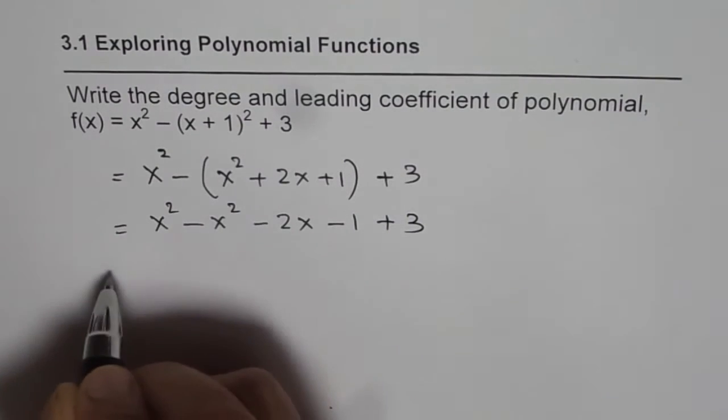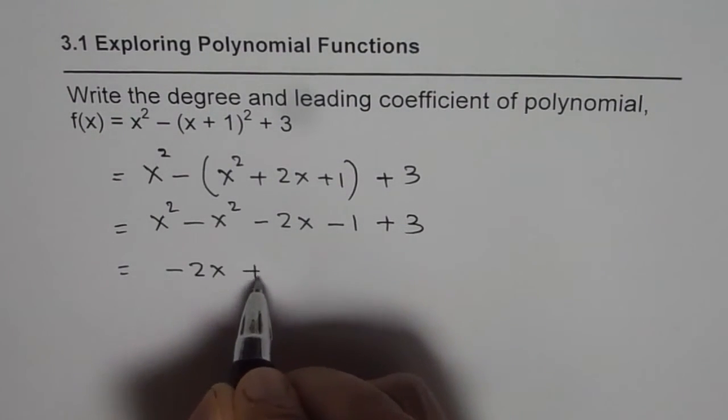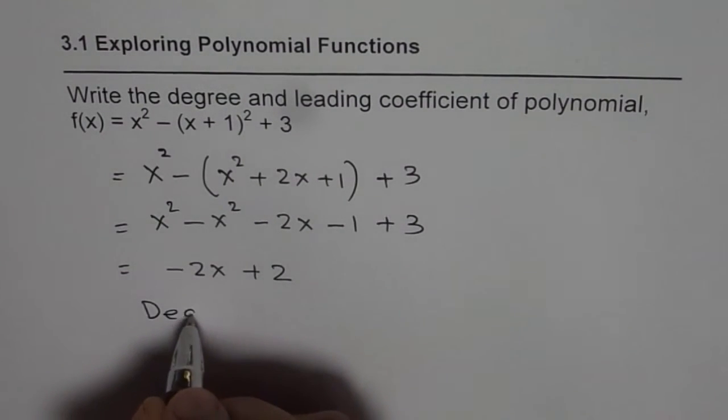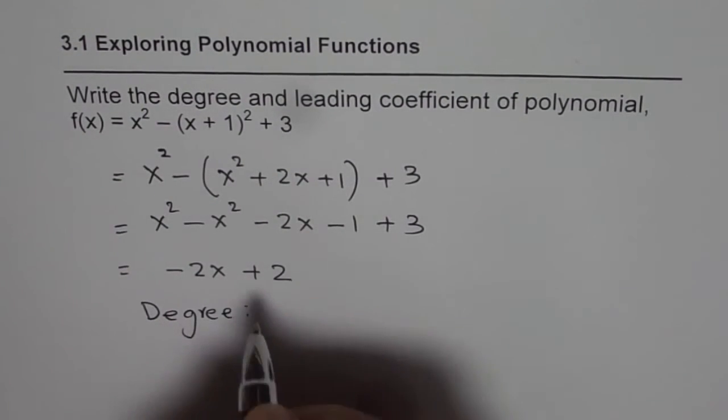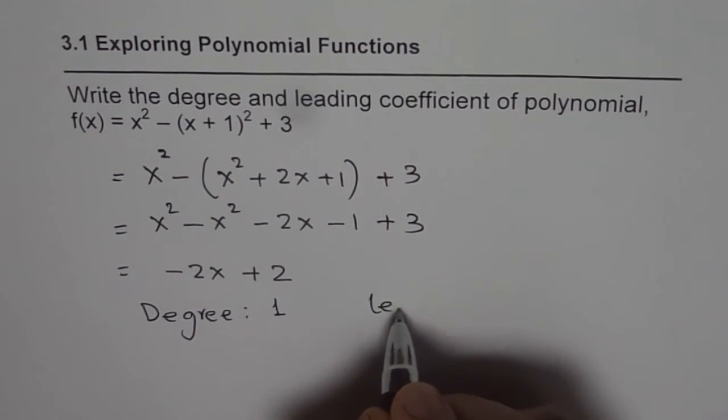And that gives me -2x + 2. Now tell me what is the degree of this polynomial? The degree is not 2, right? Now the degree is 1. It's a linear equation and the leading coefficient is how much?